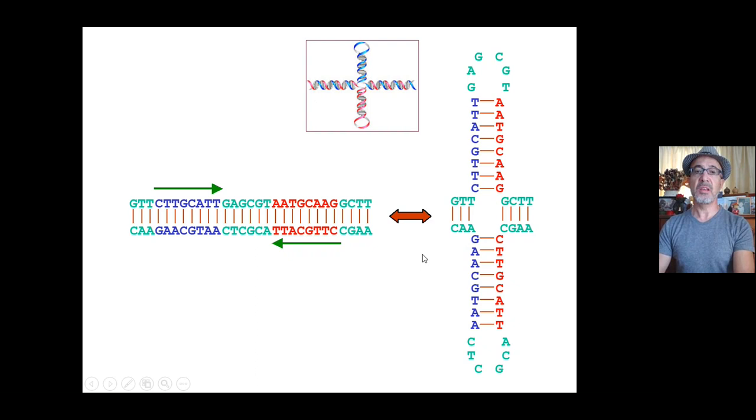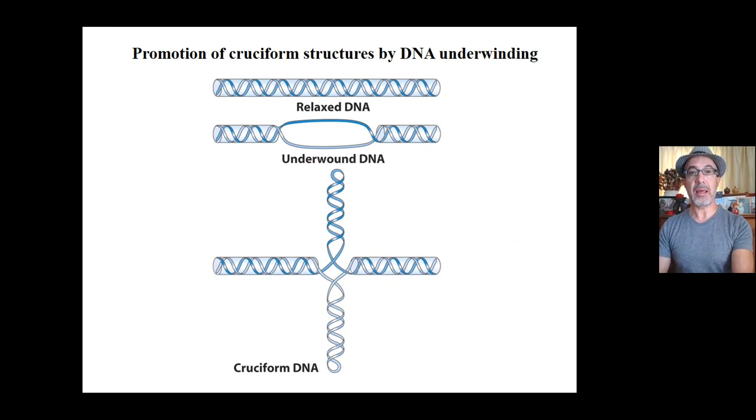So, you should remember that such cruciforms are never as stable as the normal double duplexes. However, their formation tend to relieve torsional stress of negatively supercoiled DNA. You should note that negatively supercoiled DNA can lead to local unwinding and this will promote the formation of cruciform as you can see on this slide.